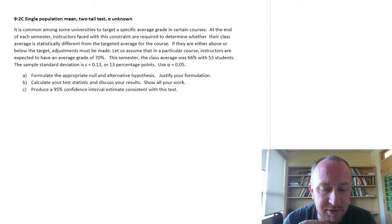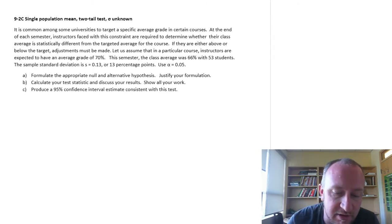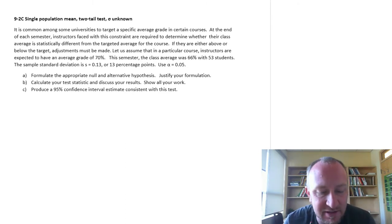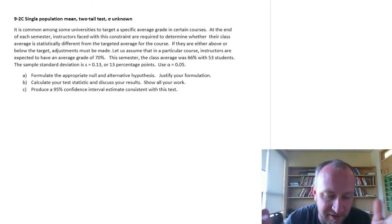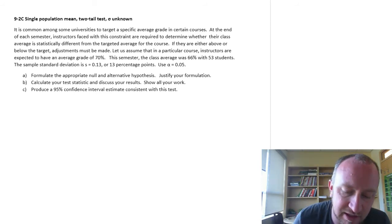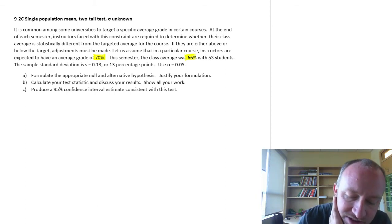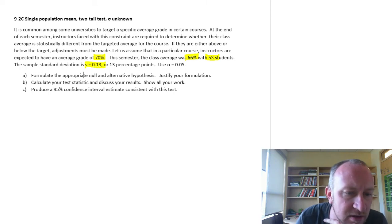It's common among some universities to target a specific average grade in certain courses. At the end of each semester, instructors faced with this constraint are required to determine whether their class average is statistically different from the targeted average. If they are above or below, then some adjustment has to be made. Let's assume in a particular course, instructors are expected to have an average of 70%. This semester we had an average of 66% with 53 students and a sample standard deviation of 13 percentage points. So let's go ahead and set this up.